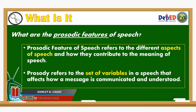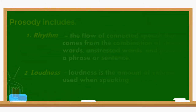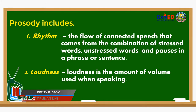Let us now study the prosodic features of speech. Prosodic feature of speech refers to the different aspects of speech and how they contribute to the meaning of speech. Meanwhile, prosody refers to the set of variables in a speech that affects how a message is communicated and understood. Prosody includes: 1. Rhythm — the flow of connected speech that comes from the combination of stressed words, unstressed words, and pauses in a phrase or sentence.